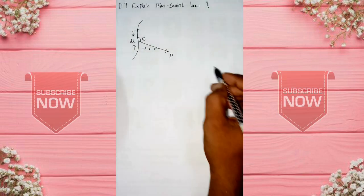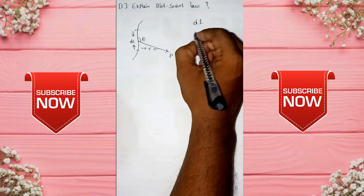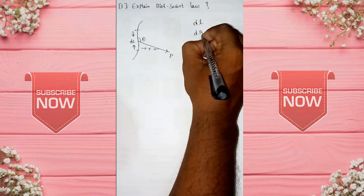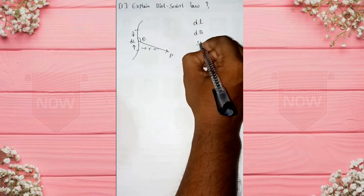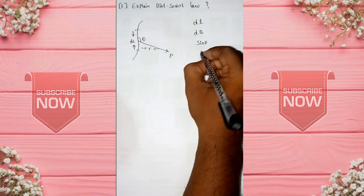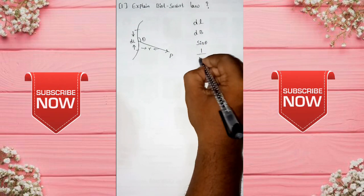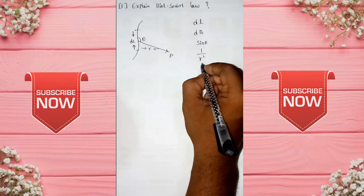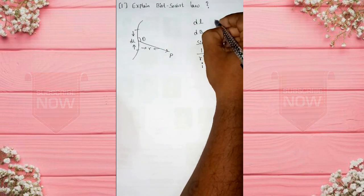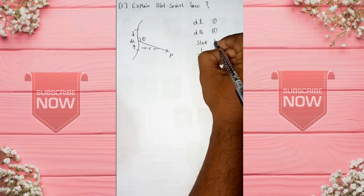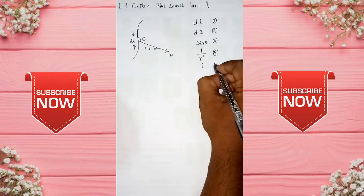First value, dl. Next to db. Next to sin theta. Next to 1 by r square. Next to i. Total 5. 1, 2, 3, 4, 5.